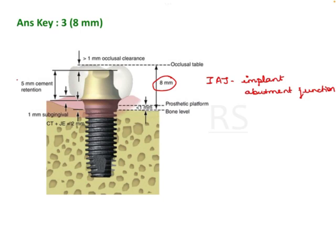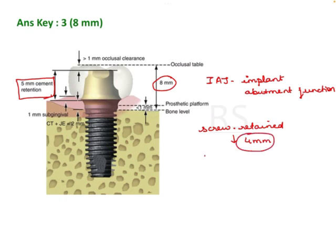Let's try to break down this 8mm. First, we have 5mm of cement retention. In screw-retained restorations, you need a minimum of 4mm of restorative space. In a cement-retained restoration, you need a minimum of 5mm of restoration space — so 5mm for cement retention.